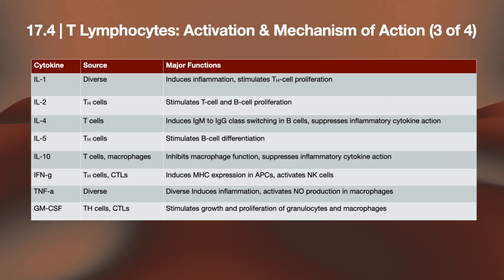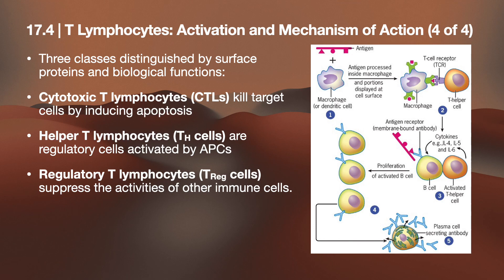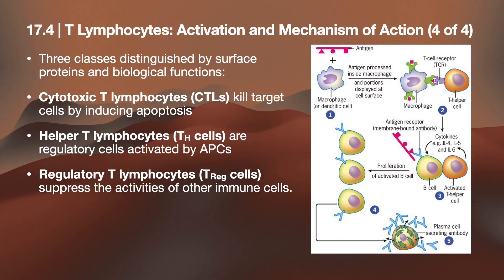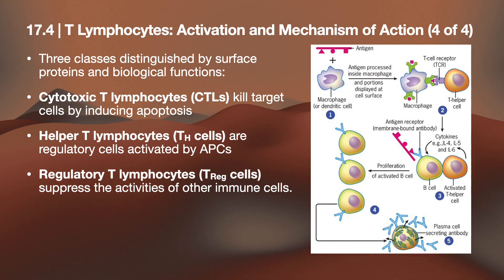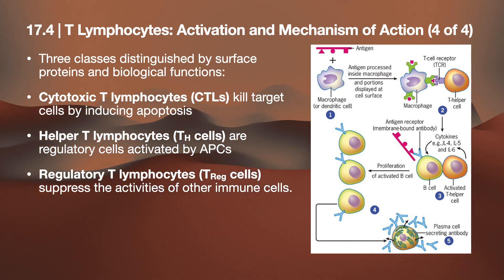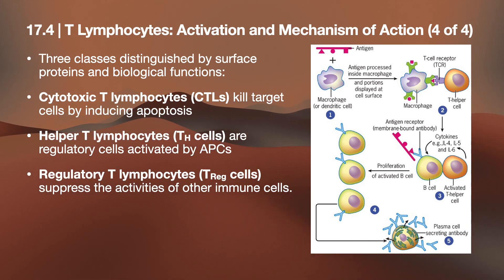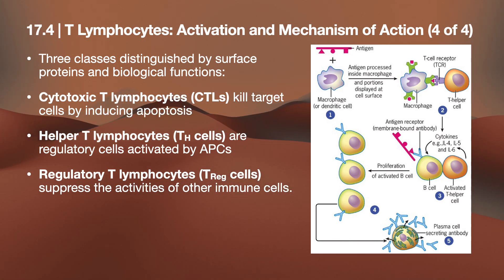GM-CSF from helper T cells and CTLs stimulates the growth and proliferation of granulocytes and macrophages. There are three T cell classes distinguished by surface proteins and biological functions: cytotoxic T lymphocytes (CTLs), which kill target cells by inducing apoptosis; helper T lymphocytes, which are regulatory cells activated by APCs; and regulatory T lymphocytes (Tregs), which suppress the activities of other immune cells.